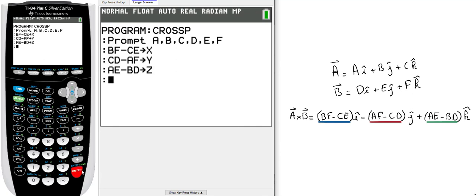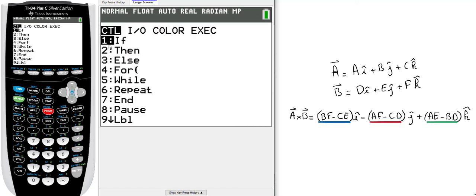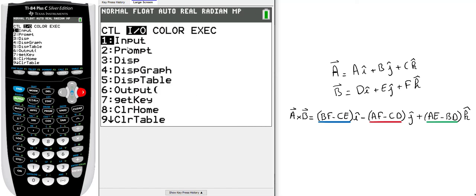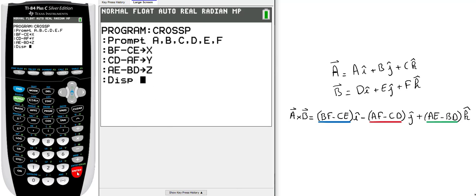Now I want to display these x, y, and z answers. Click back on program, input output, and select the third option, display. You want to display x, y, and z. You're done, that's your program.